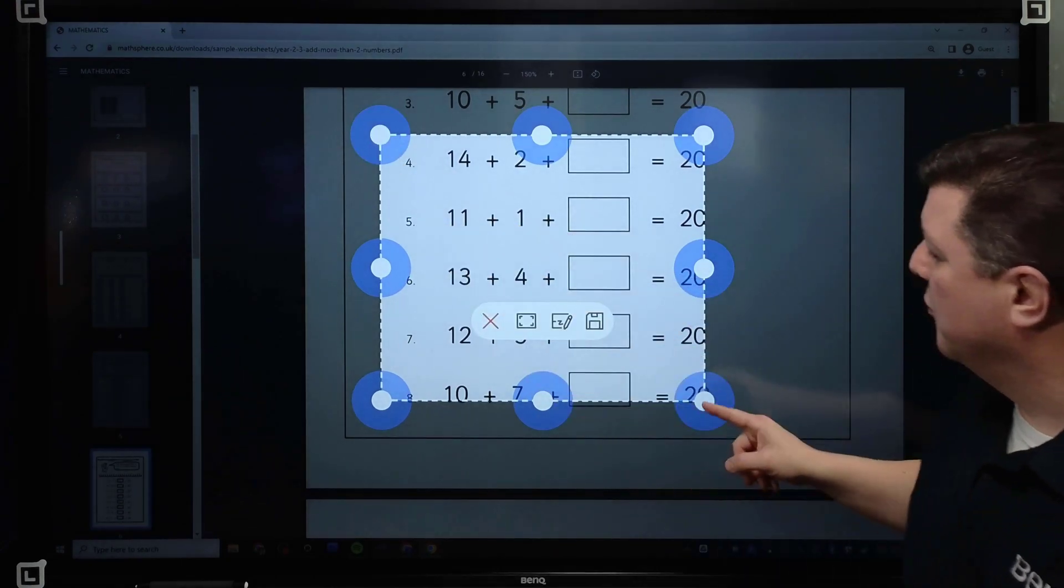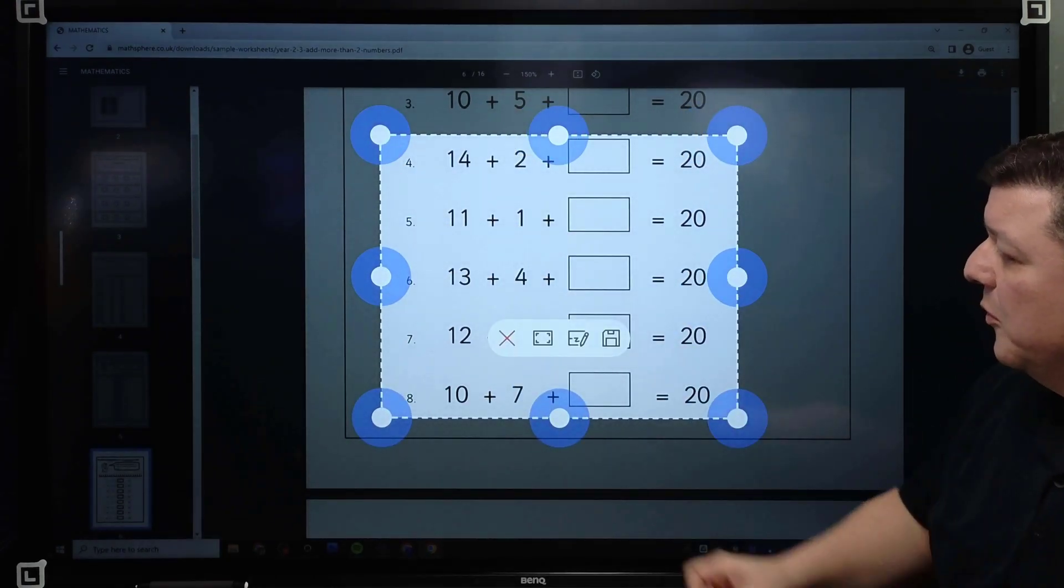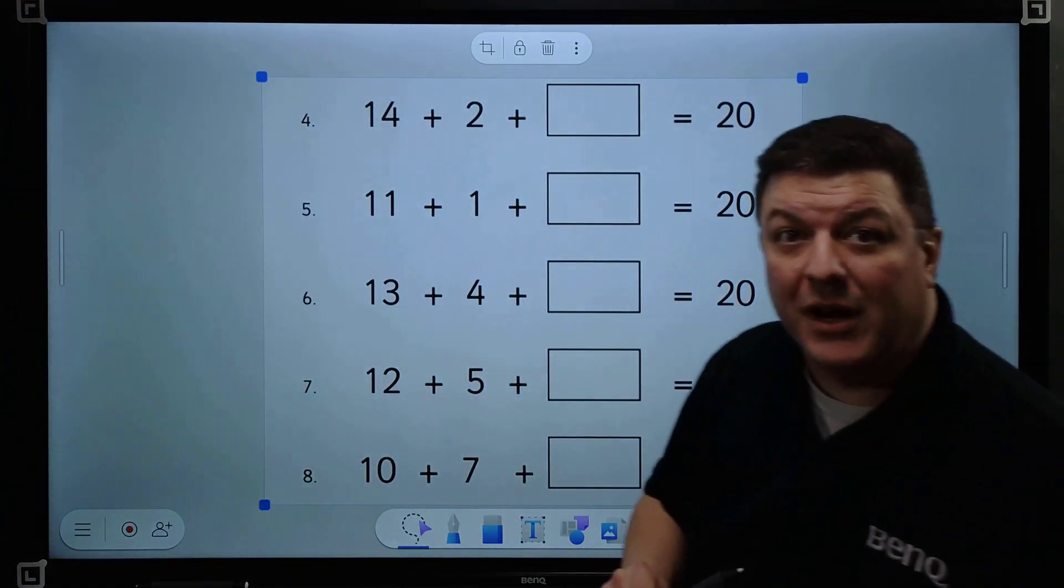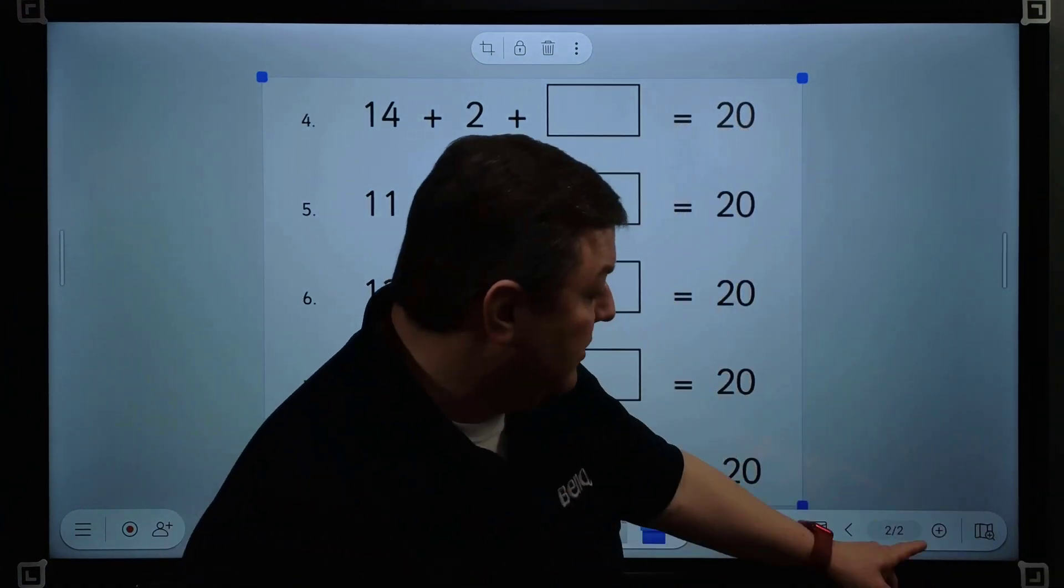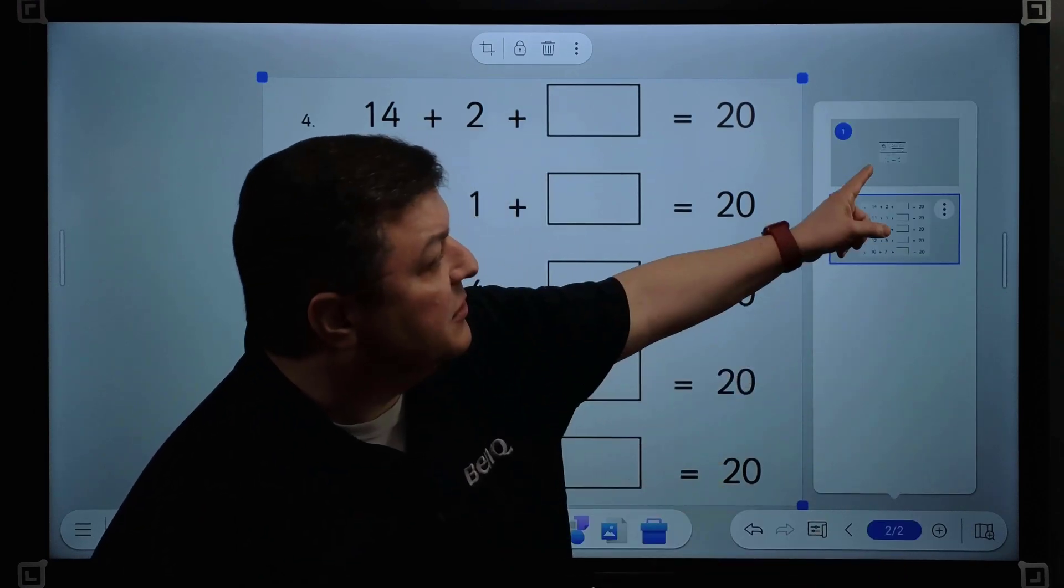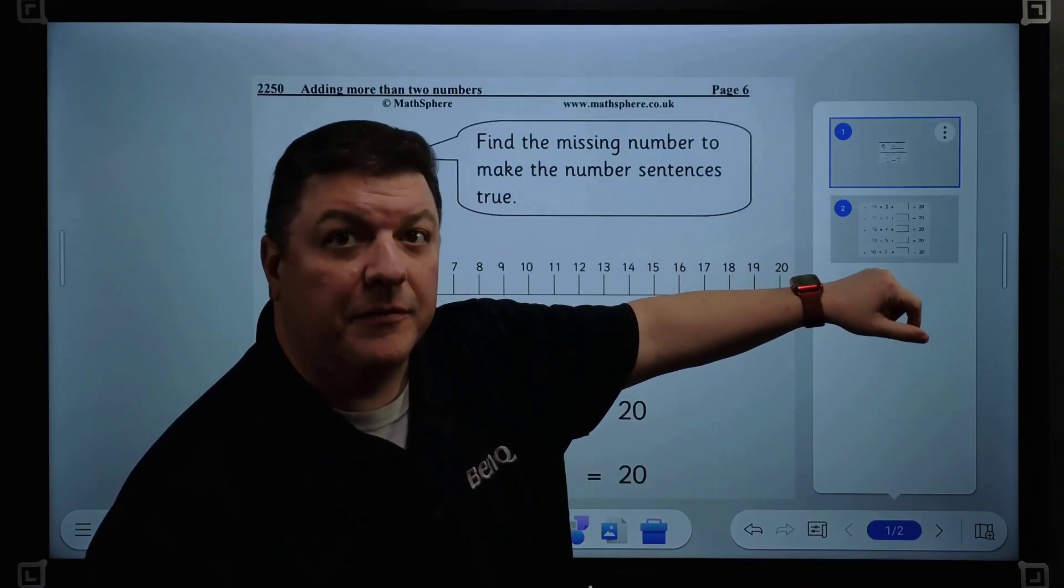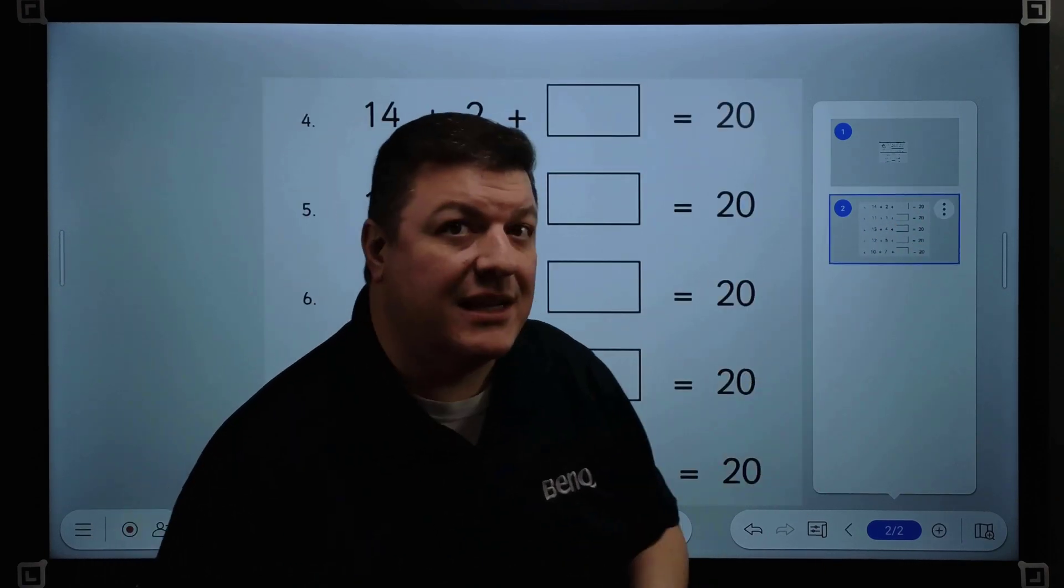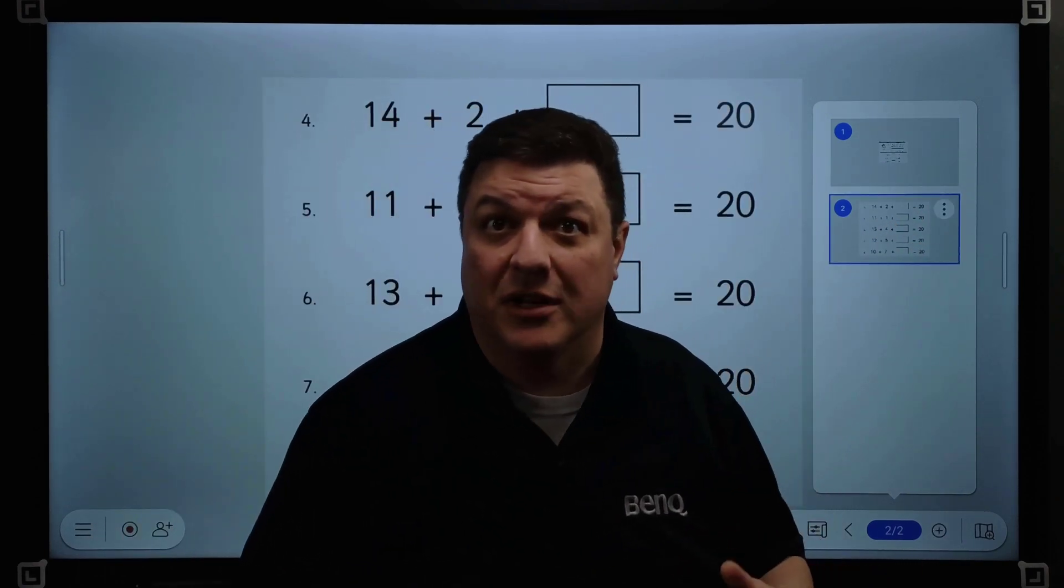I'm going to hit the screenshot button again. I'm going to highlight around four, problem four through eight, and I'm going to hit that EasyWrite button again. And again, it jumps it right over to EasyWrite. Now, notice we have a two right here. If I hit this button, there's the first half of the page that I took snapshots of, and then here's the second half of the page that I took screenshots from.